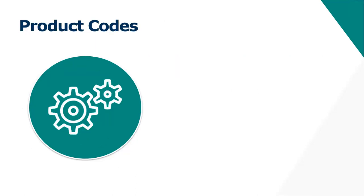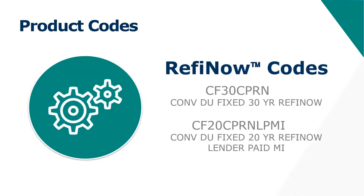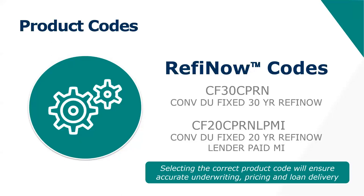The product codes are listed on screen. Make sure you select the correct product code — you can find these on the rate sheet or in the broker portal. We've made sure the product descriptions are consistent, so you'll see 'Refi Now' at the end of the product code, for example: 'Conventional DU Fixed 30 Year Refi Now.' Make sure that product code says 'Refi Now' at the end.